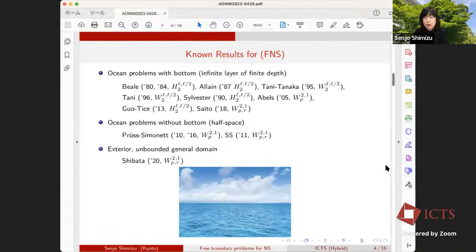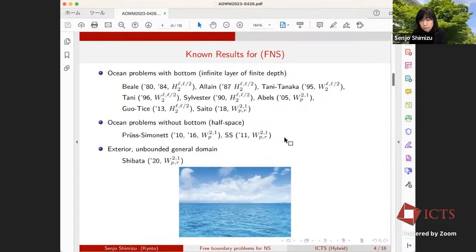For an ocean problem with bottom, so just like sea in the figure, Pioneer's works were done by Beale, Hou, Lowengrub, Schweizer, Ogawa, Tani, Tanaka, Tani, Sylvester, Avilés, Gancedo, Saito, who obtained local and global well-posedness. For ocean problems without bottom, Prüss Simonett and myself obtained local well-posedness for a two-phase problem. For an unbounded general domain, Shibata obtained global well-posedness. Today's our problem belongs to ocean problems without bottom.